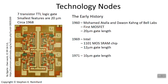There's a system for tracking the progress in integrated circuit manufacturing and design called the technology node. Technology nodes are numbers in units of nanometers that indicate a key dimension in the device.